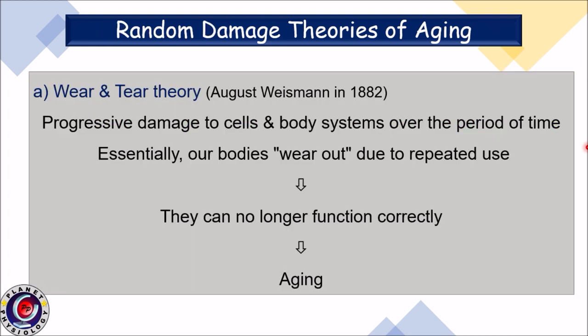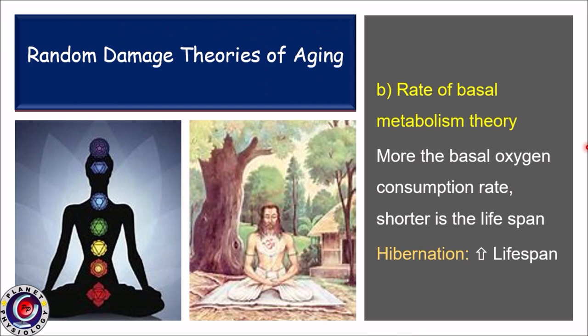Now let us look at some random damage theories. First is the wear and tear theory, which states there is progressive damage to cells and body systems over time — similar to any machine, our body also wears out due to repeated use and loses proper functionality, leading to aging. Next is the rate of basal metabolism theory, which states that the greater the basal oxygen consumption rate, the shorter the lifespan. This explains why hibernating animals have a greater lifespan, and it has also been found that yogis who perform regular meditation also have a prolonged lifespan.